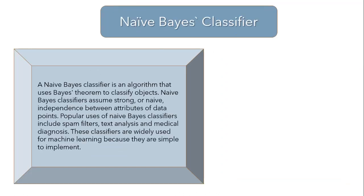Now that we have a clear understanding of dependent and independent events, conditional probability, and Bayes theorem, let's quickly see how we can use this for building our Naive Bayes classifier. Naive Bayes classifiers are simple probabilistic classifiers that use Bayes theorem with strong independence assumptions between features. A Naive Bayes classifier assumes that the presence of a particular feature in a class is not related to the presence of any other feature. For example, a ball may be considered a soccer ball if it is hard, round, and about 7 inches in diameter — even if these features depend on each other, Naive Bayes believes all properties independently contribute to the probability, and that is why it is called Naive.